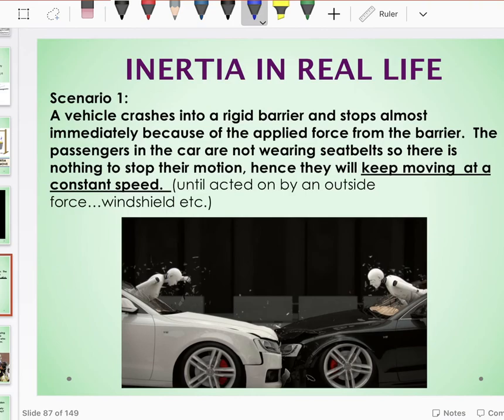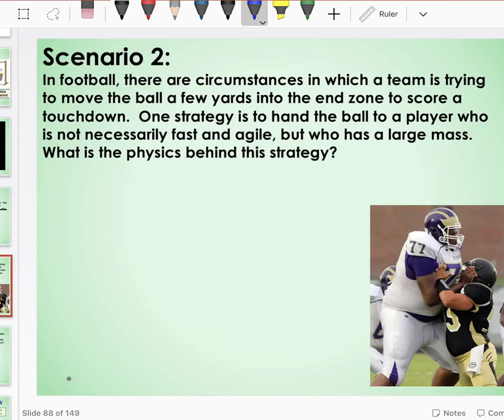So the passenger was in motion with the vehicle. The vehicle stopped due to the unbalanced force, but the passengers have nothing to stop their motion. So they will keep moving until acted on by an outside force, which, if they're not wearing seatbelts and there's no airbags to stop them, just might be the windshield. So if your car stops, the reason you keep flying forward is due to Newton's first law. An object in motion stays in motion until acted on by an outside force.